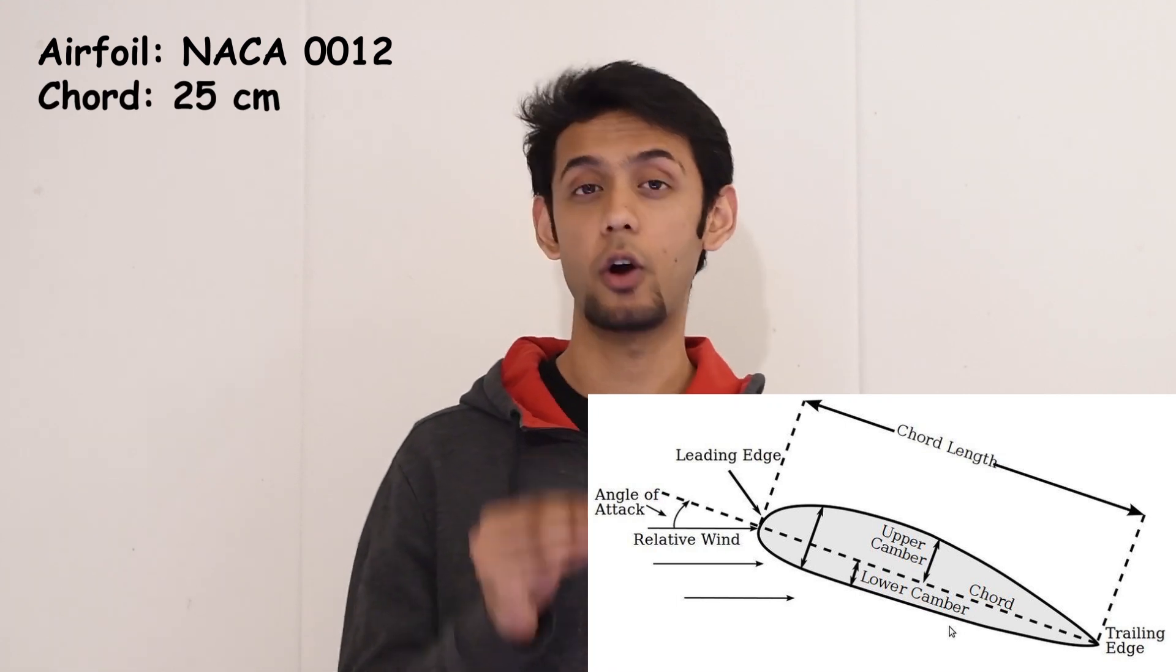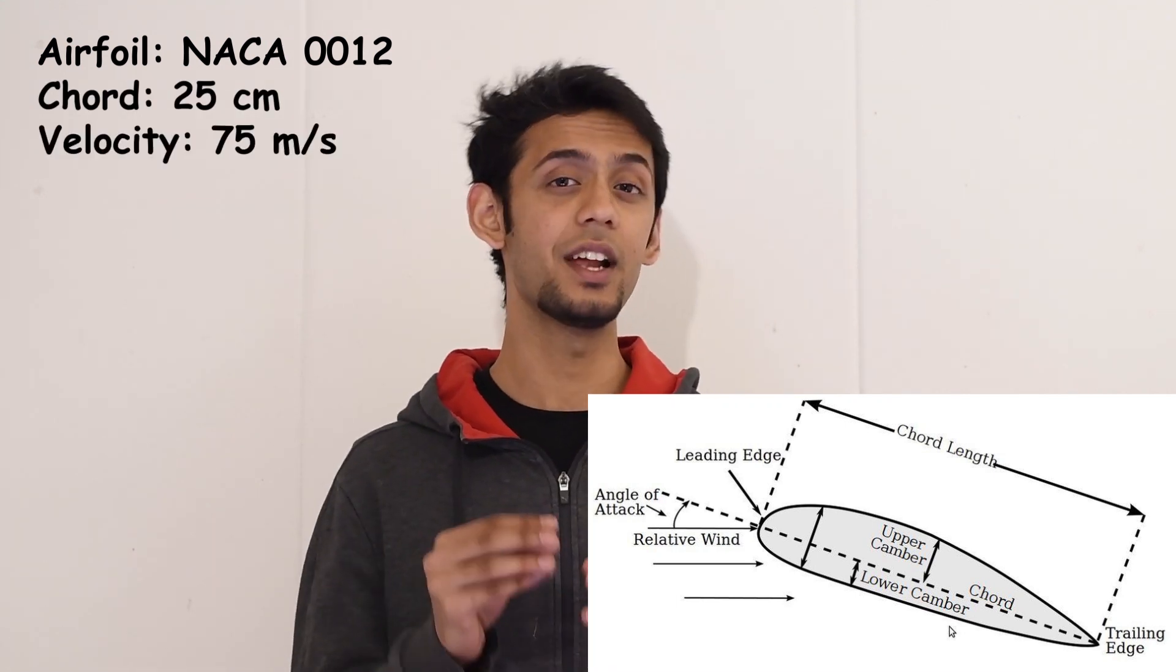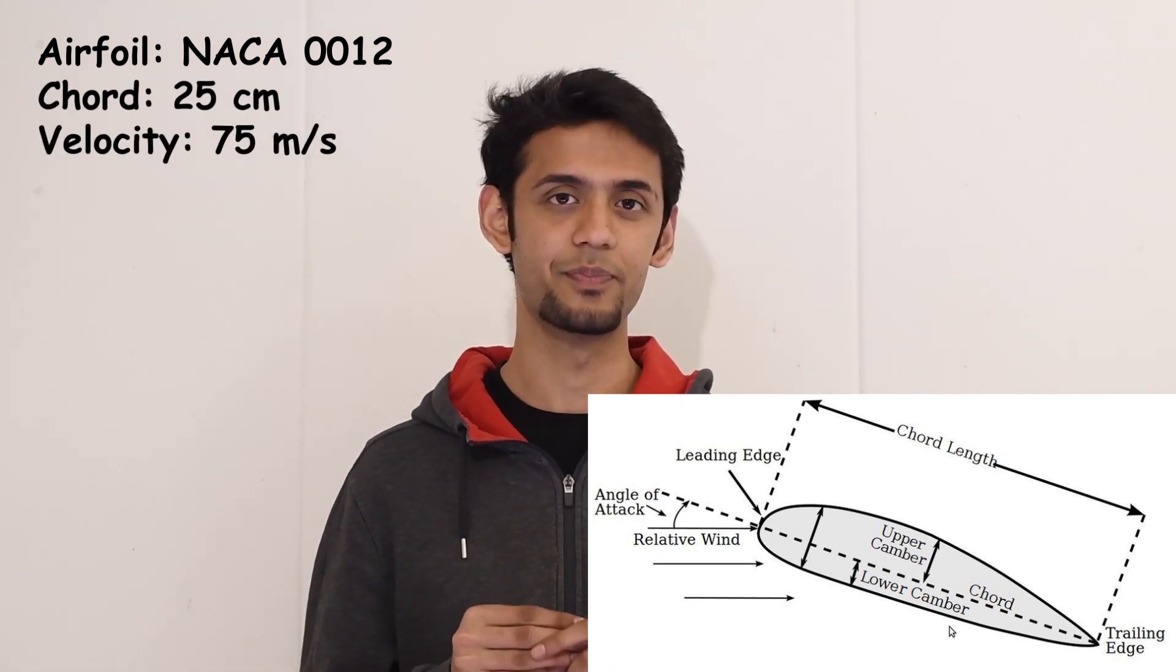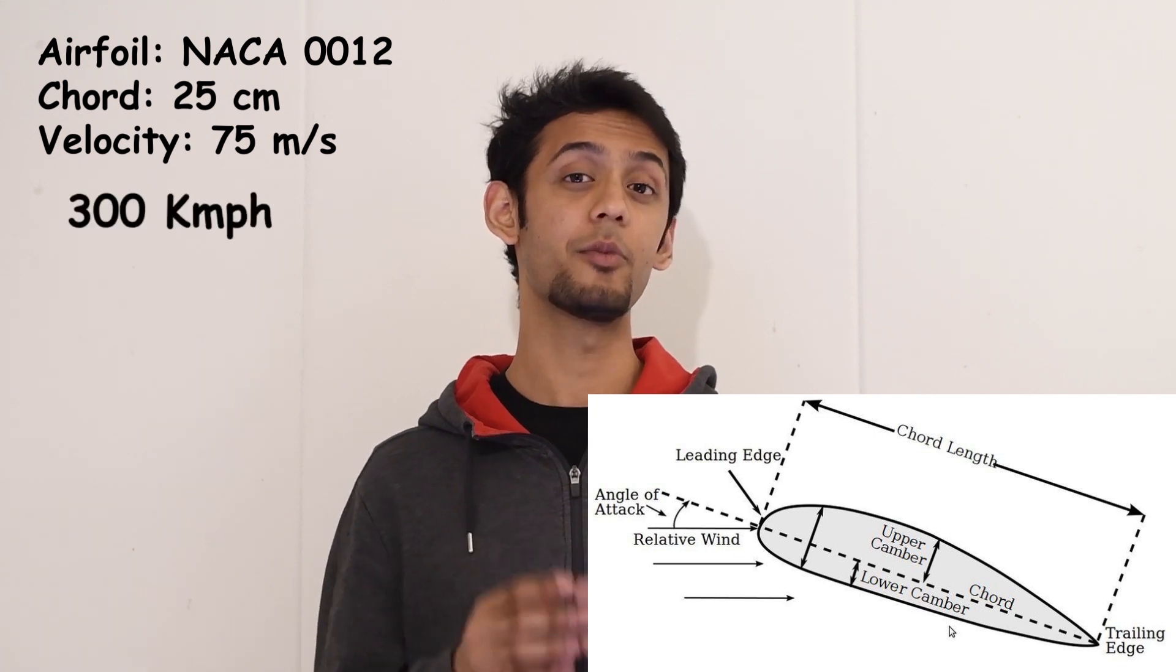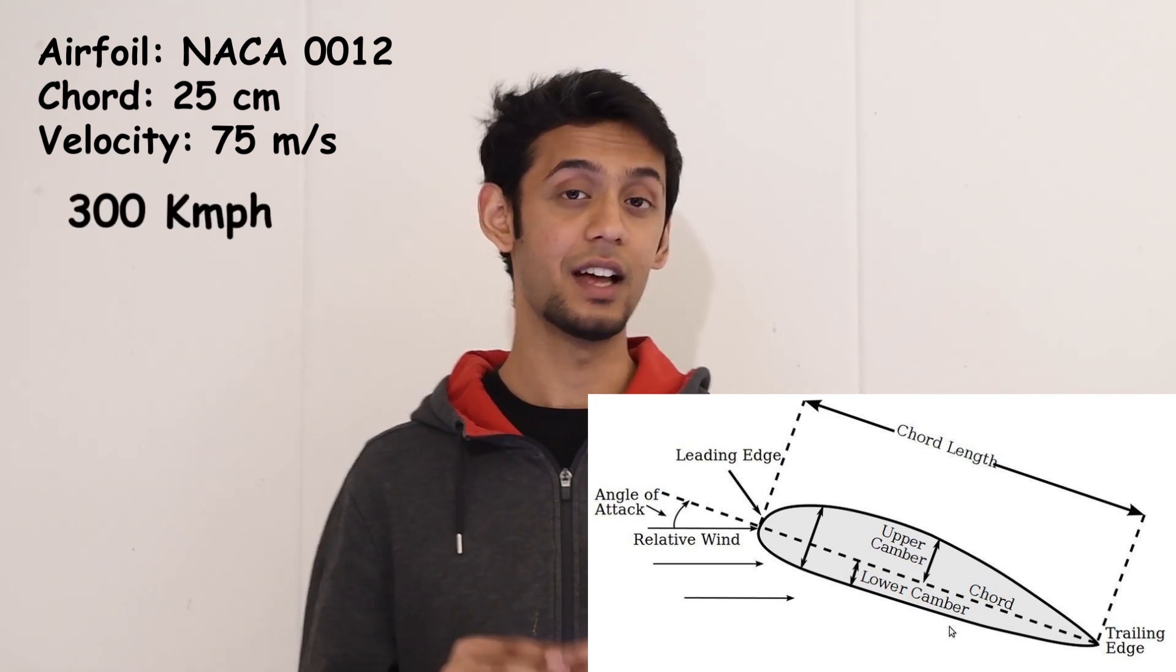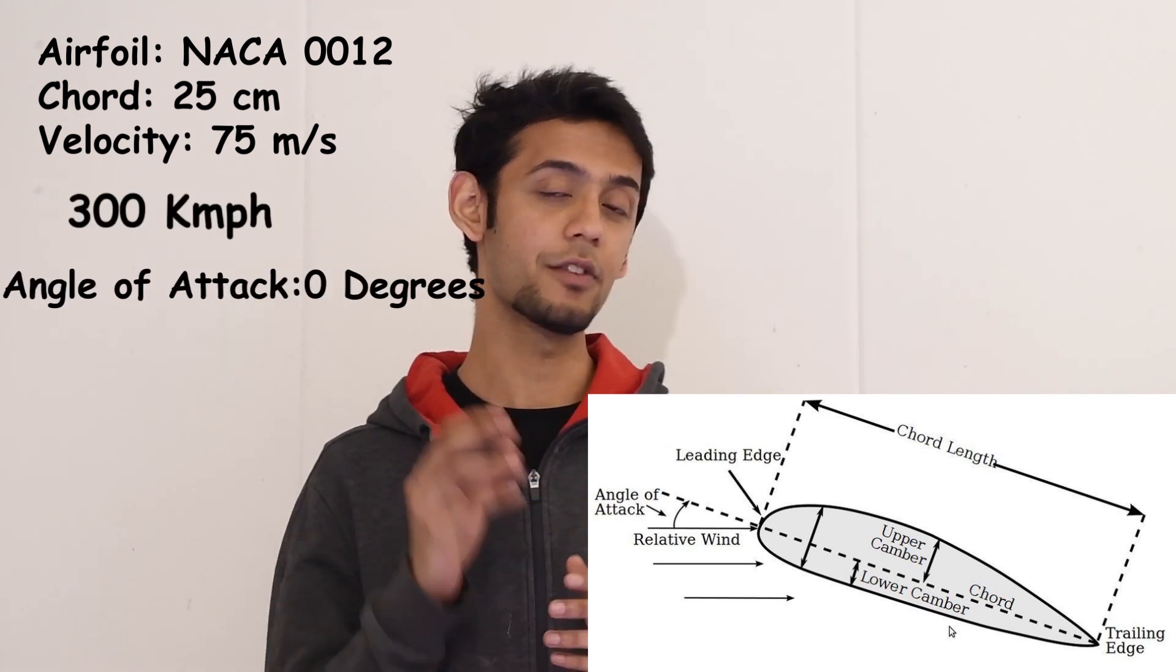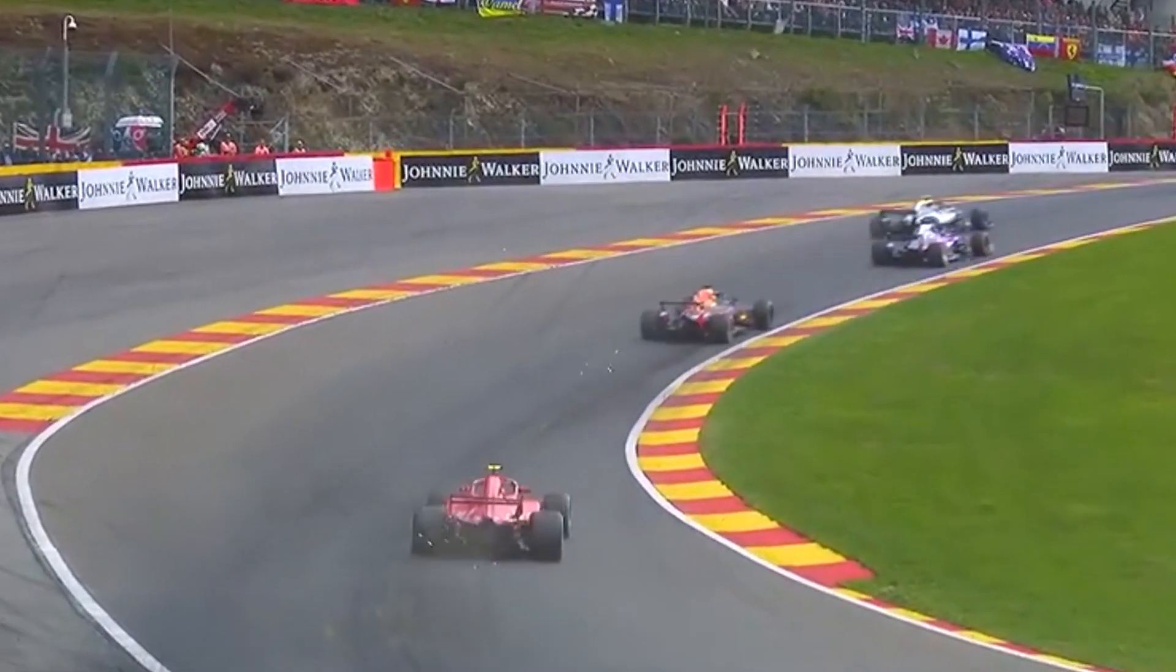The airfoil, which has a chord of 25 cm, is simulated at a speed of 75 meters per second. This translates to a speed of about 300 kilometers per hour and the airfoil is set at an angle of attack of 0 degrees. These speeds are usually encountered in a lot of motorsports like Formula 1.